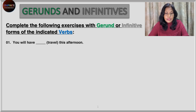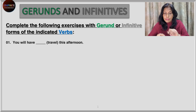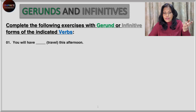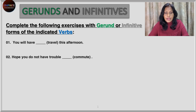The first sentence is: you will have blank — the verb is 'travel' — this afternoon. You have to decide whether it's the gerund form or the infinitive form of the word 'travel' to use in the blank space. For each sentence, I'll give you the verb and you'll decide the form. The second: hope you do not have trouble, blank — verb is 'commute'.